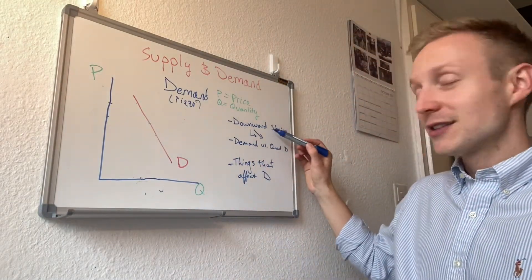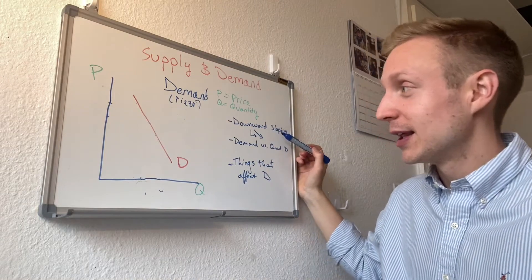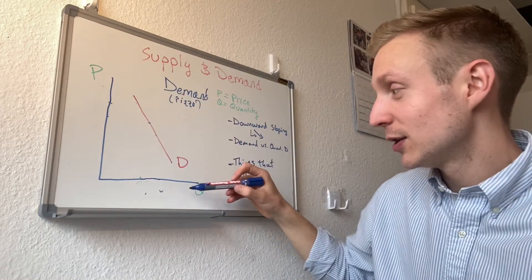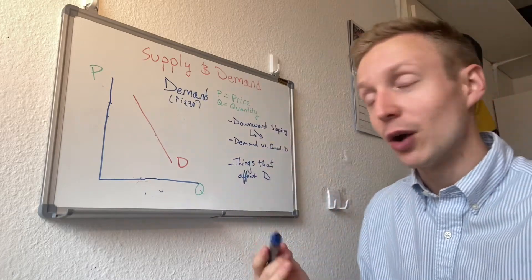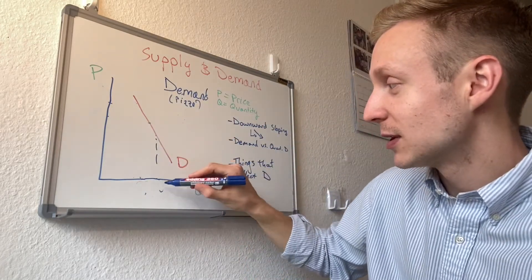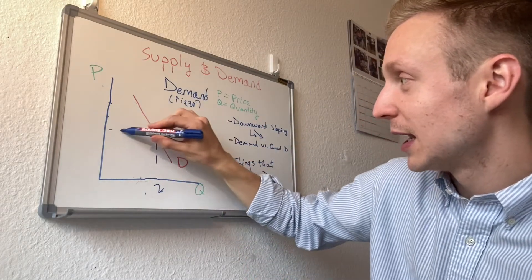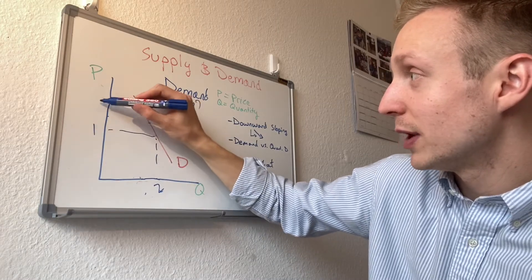Demand is always downward sloping. That means as P goes up, Q goes down - P being price, Q being quantity. Just for example, let's say we could sell two pizzas at one dollar. Well, now if it's two dollars for pizza, we can sell one pizza. Right, so it's always downward sloping, the demand curve.